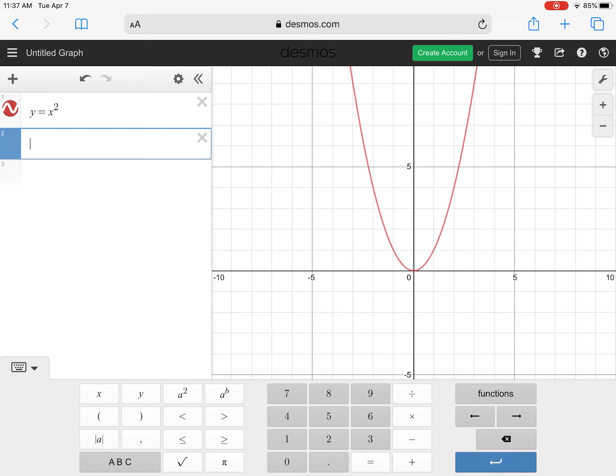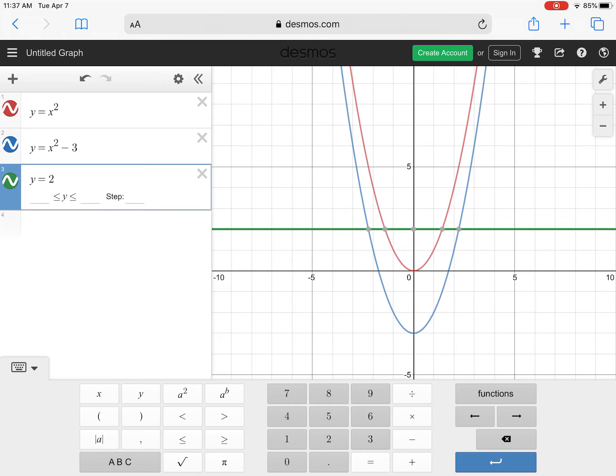And so the second graph was y equals x squared minus 3. All right, and the third one was y equals 2x squared minus 5x plus 4.